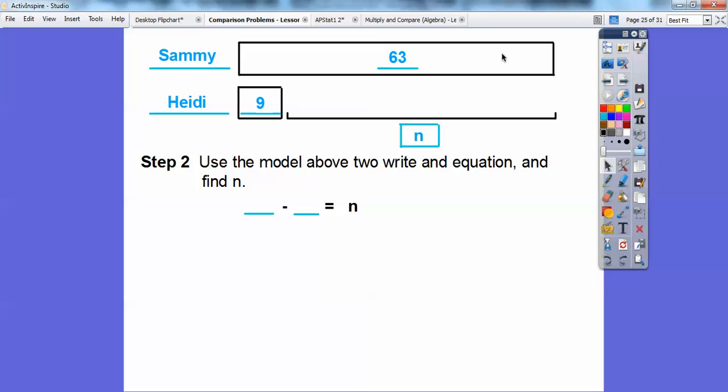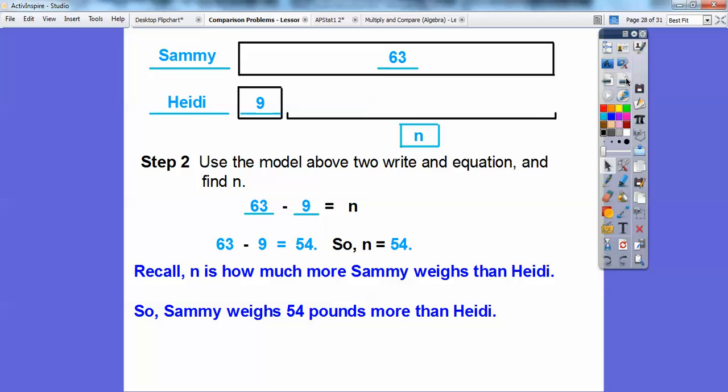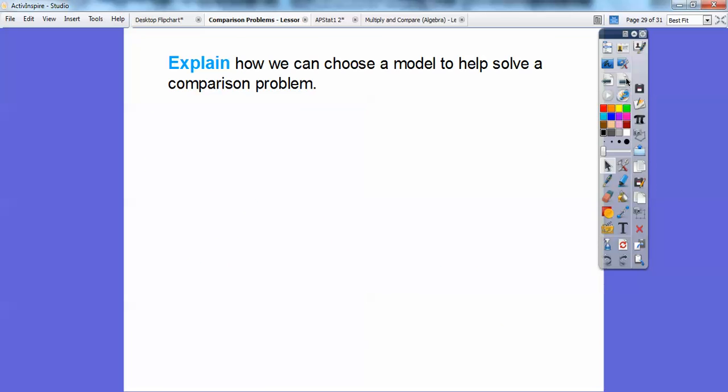Well, if this whole thing is 63 and that little piece is nine, then this is the rest of the 63. So it must be 63 minus nine equals n right there. So n is going to be 54. Now let's make sure we answer the question. And recall n is how much more Sammy weighs than Heidi, so Sammy weighs 54 pounds more than Heidi does.